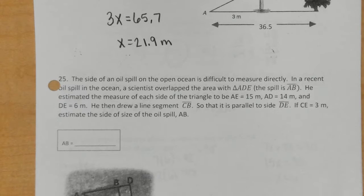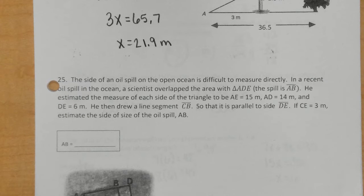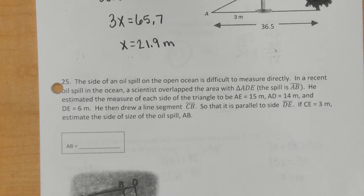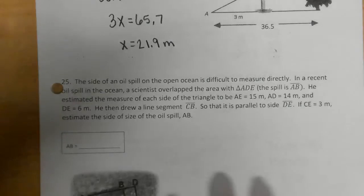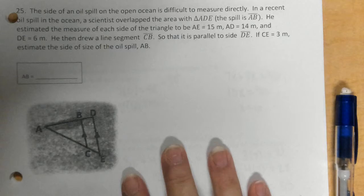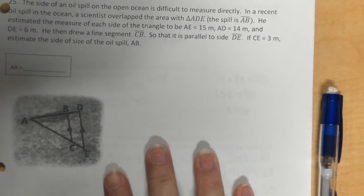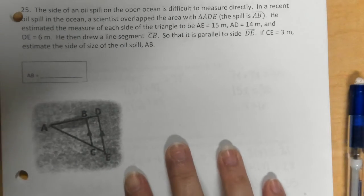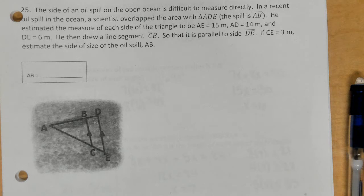And then, lastly, on 25, this one I would just mainly advise that you read the story problem and label as you go. I know the picture isn't the best, but let's just try it. So, the side of an oil spill on the open ocean is difficult to measure directly. In a recent oil spill in the ocean, a scientist overlapped the area with triangle ADE. The spill is AB.